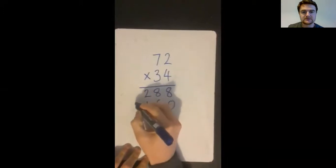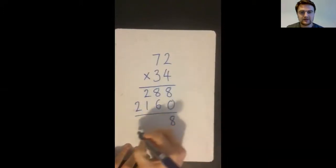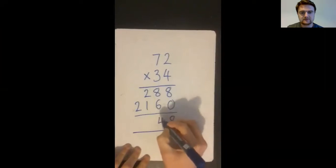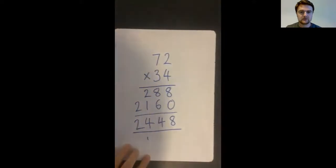Two times three is six, and seven times three is 21. Finally, all I need to do is add them together. And you can get our answer.